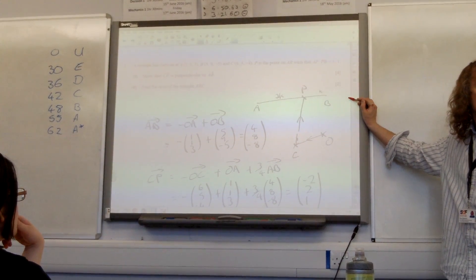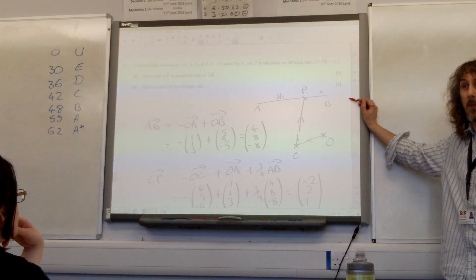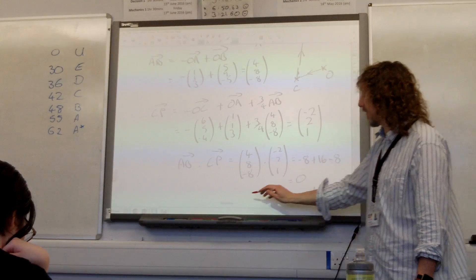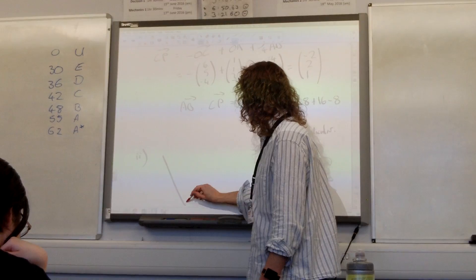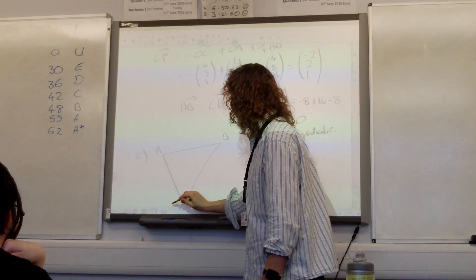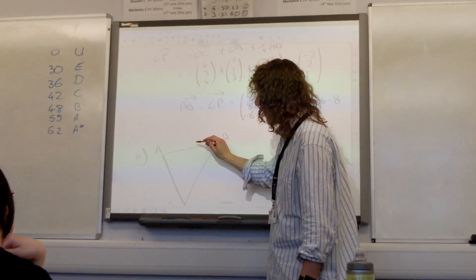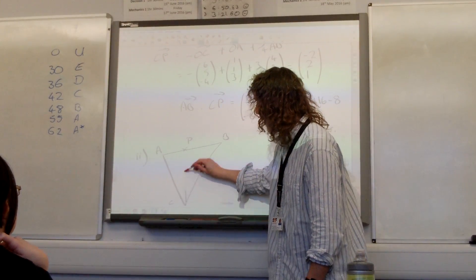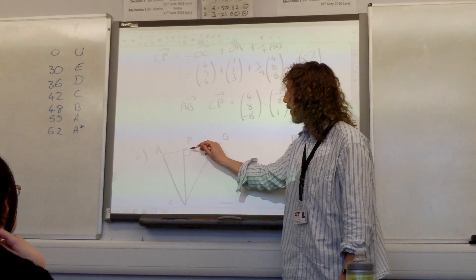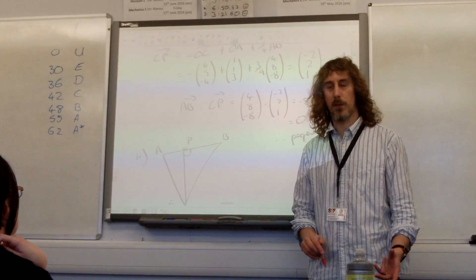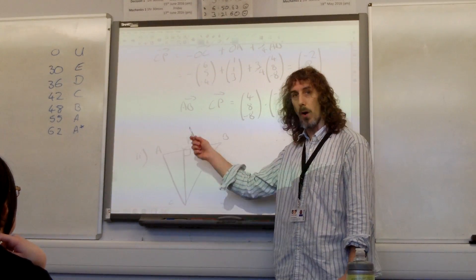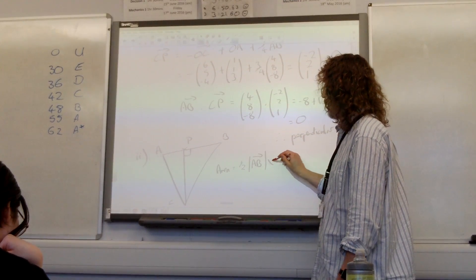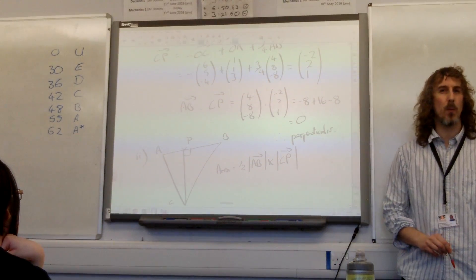For the area of triangle ABC, most of you had the method right but made a few mathematical errors with multiplications. The area of the triangle: since CP is perpendicular to AB and P lies on AB, we can use area equals a half times the length of AB times the length of CP. These are things we've already worked out in the previous part.